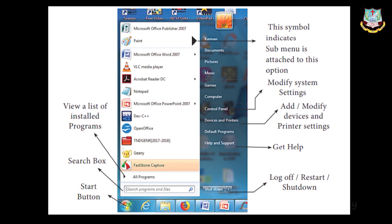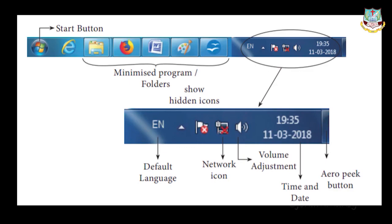The taskbar is the horizontal bar at the bottom of the screen. It contains contents from the Start button going left to right, including shortcuts of minimized programs. In the right corner is the system tray, which contains volume control, network, date, and time. Next to the Start button is the Quick Launch toolbar, which contains frequently used application icons — for example, if you use Word frequently, the Word icon will appear near the Start button.